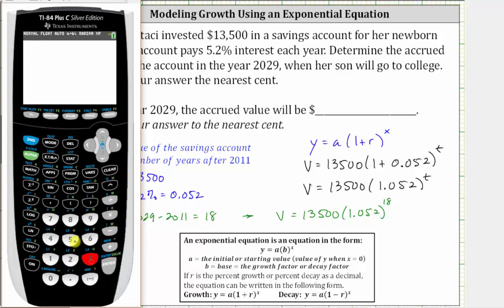So we enter 13,500, and then in parentheses we have 1.052 raised to the 18th power, enter. Rounding to the nearest cent, because we have a nine in the third decimal place, the value rounds to 33,621 dollars and 50 cents.